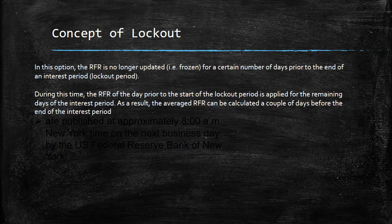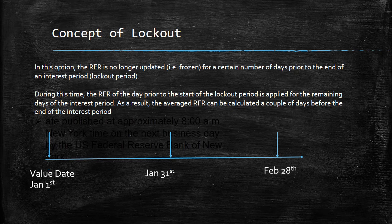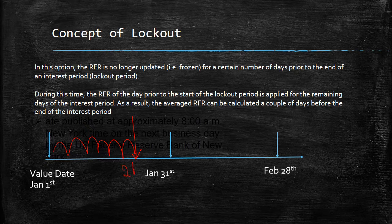The other concept is lockout. In this, the RFR is no longer updated for a certain number of days prior to the end of the interest period. So if the interest period ends on Jan 31st, the RFR is applied every day up to — say — Jan 26th, five days before, and then you stop. You no longer apply the RFR rate as it comes from the Fed. In fact, an averaged RFR is calculated a couple of days before the end of the interest period. So basically you have frozen the RFR 4 or 5 days before the payment, and hence the payment amount on Jan 31st becomes predictable. The borrower and lender are aware what the January installment looks like 4 or 5 days before the end of the interest period.